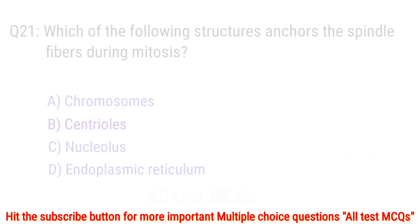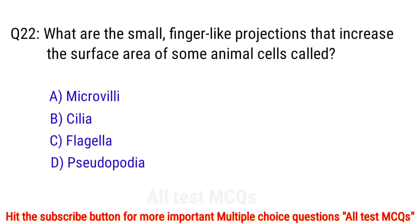Question number 22. What are the small finger-like projections that increase the surface area of some animal cells called? The right answer is option A: microvilli.